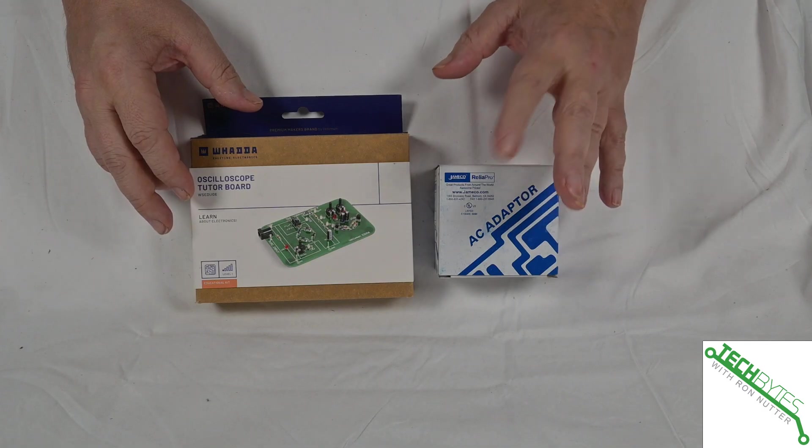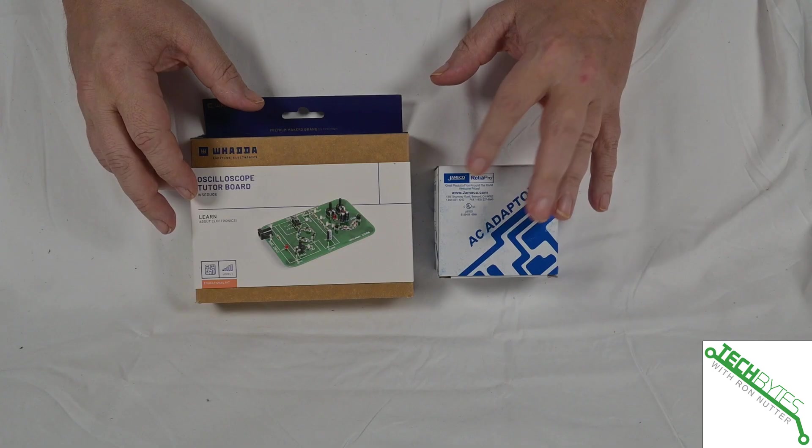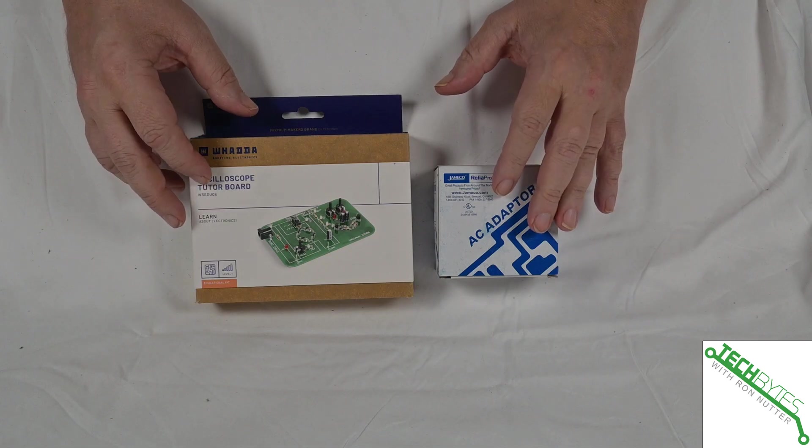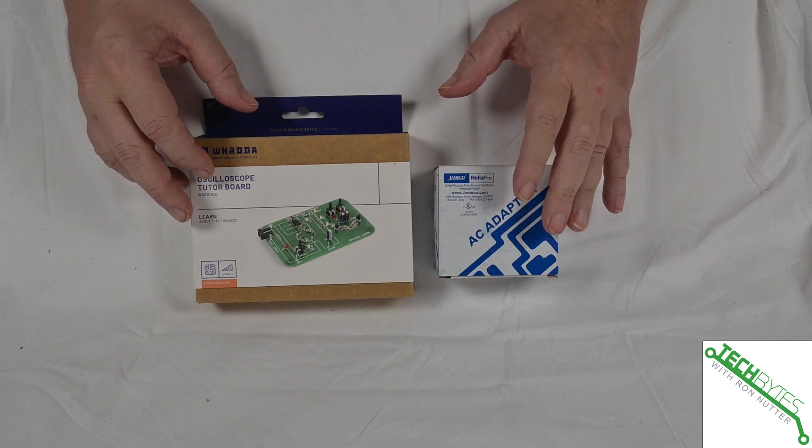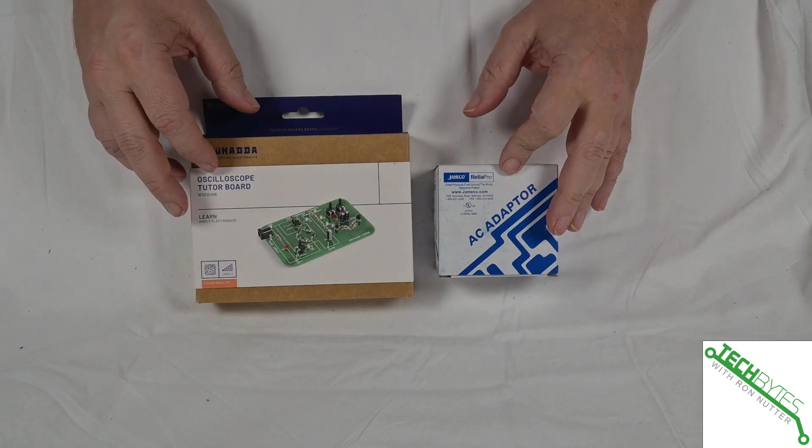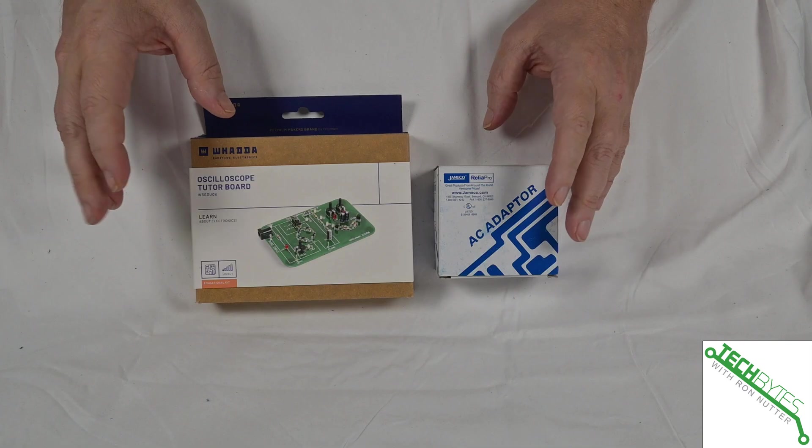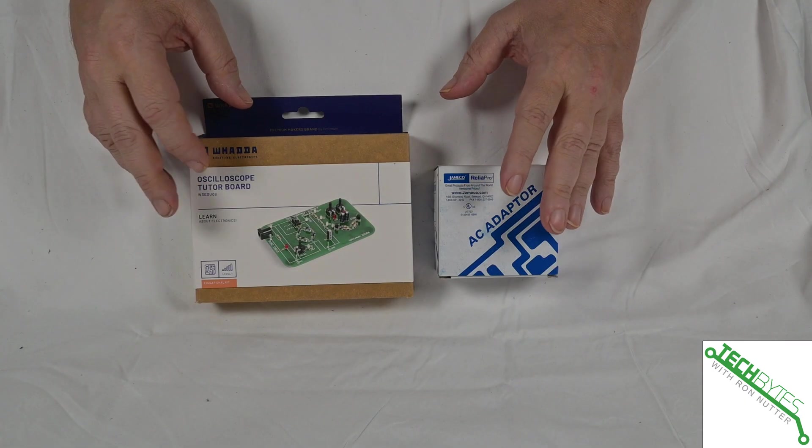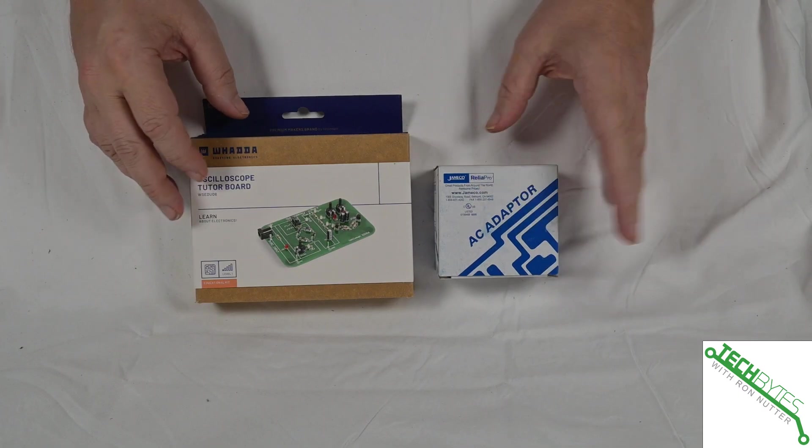This is from Jameco. This is the one to get when you get started. You'll see it linked on the page on Amazon. If you've already got an AC one that fits the requirements, then you're good to go. But if you're not exactly sure, go ahead and get one at the time you get this.